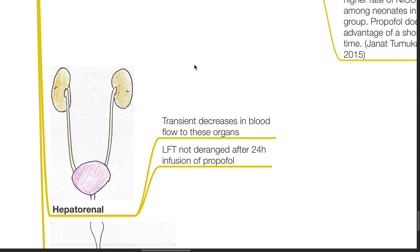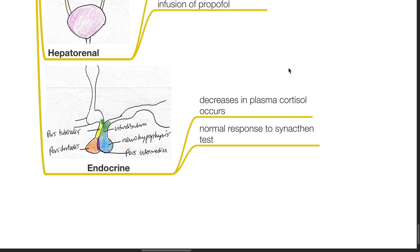Propofol causes transient decreases in blood flow to the liver and kidneys; however, liver function tests are not deranged after a 24-hour infusion of propofol. Propofol decreases plasma cortisol levels; however, there is a normal response to the Synacthen test.